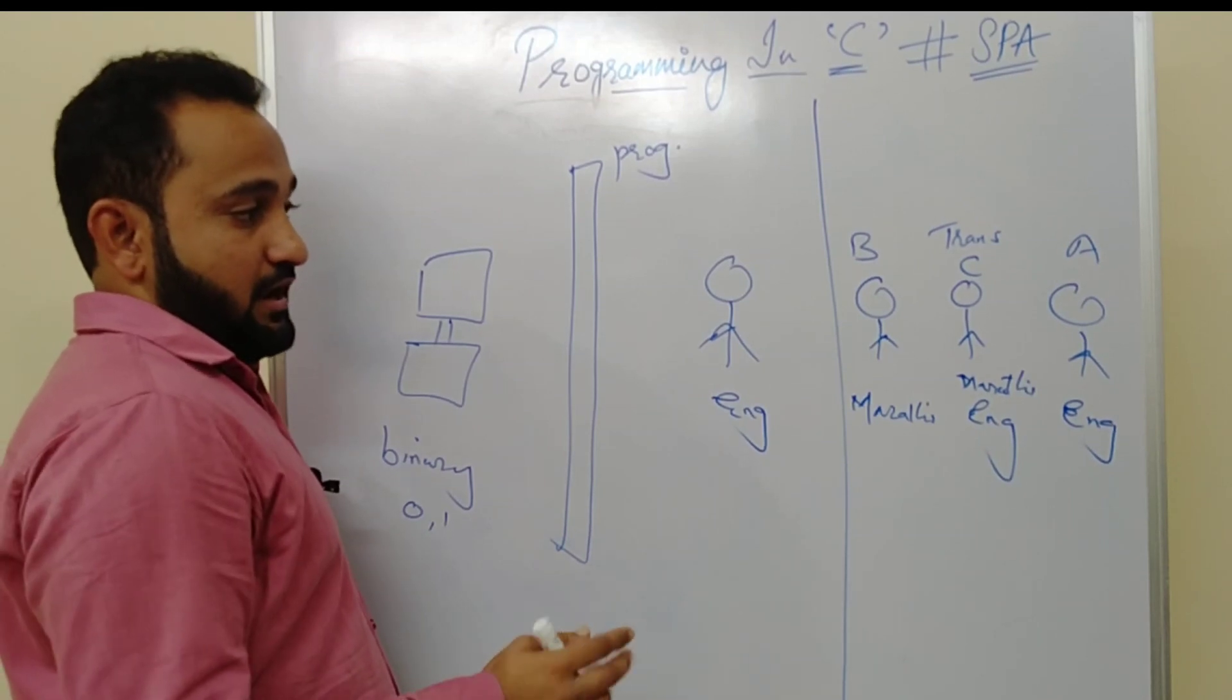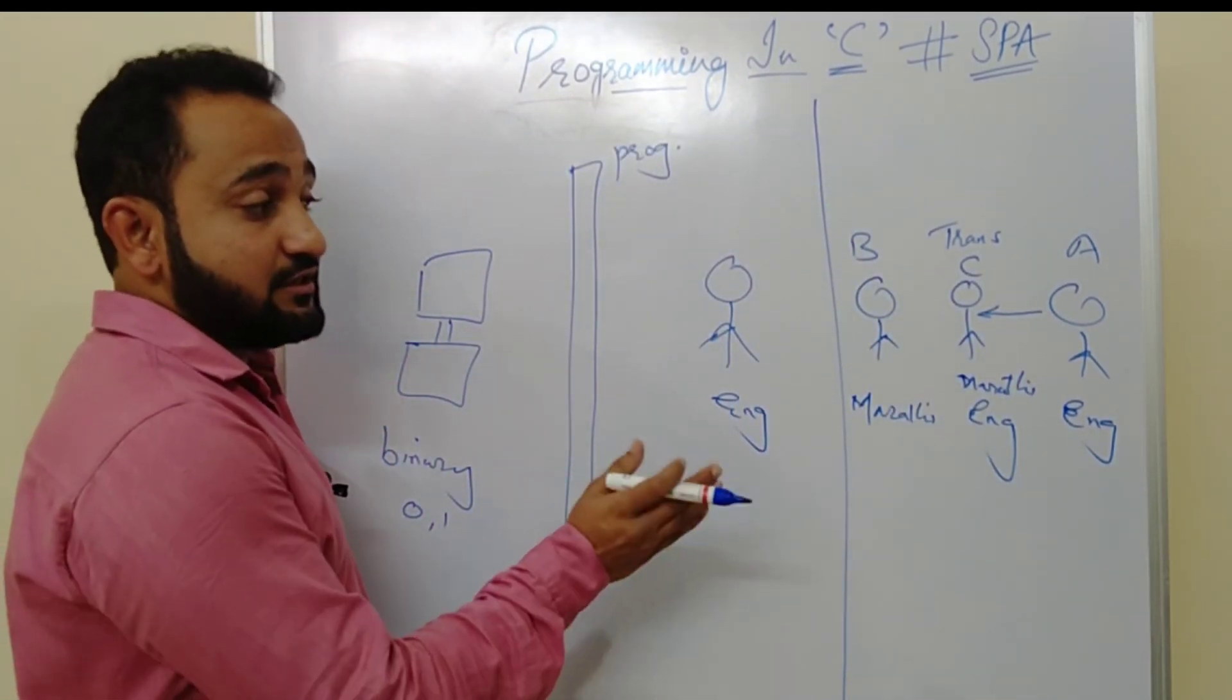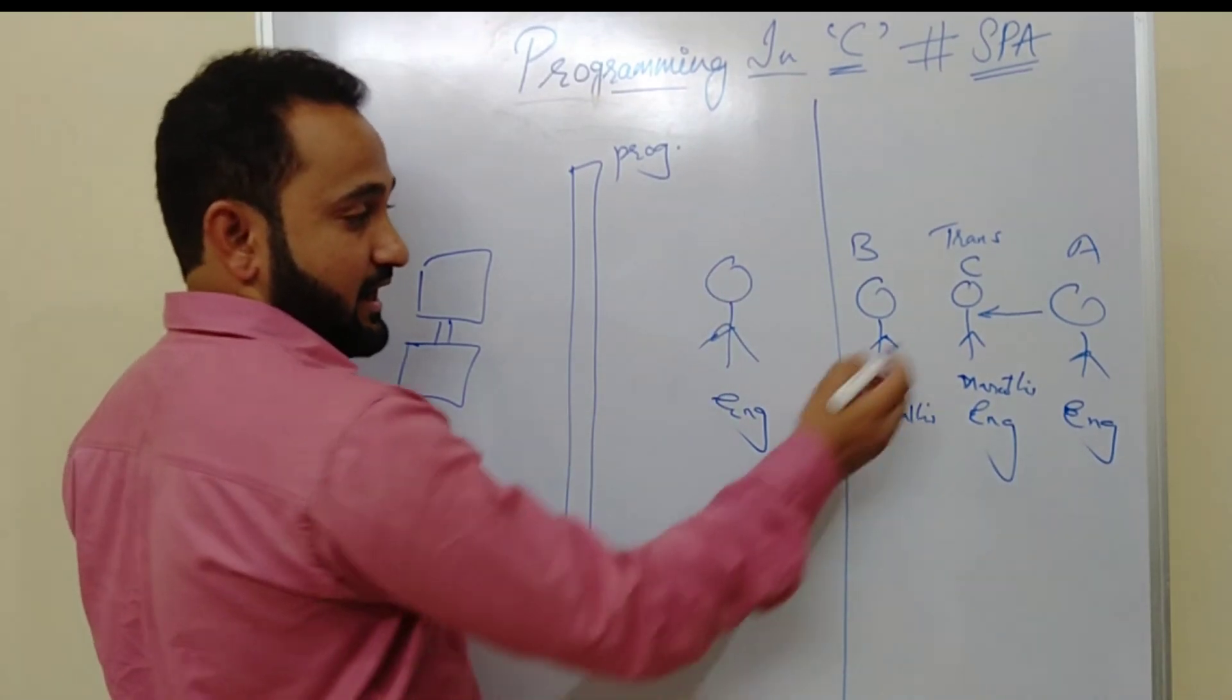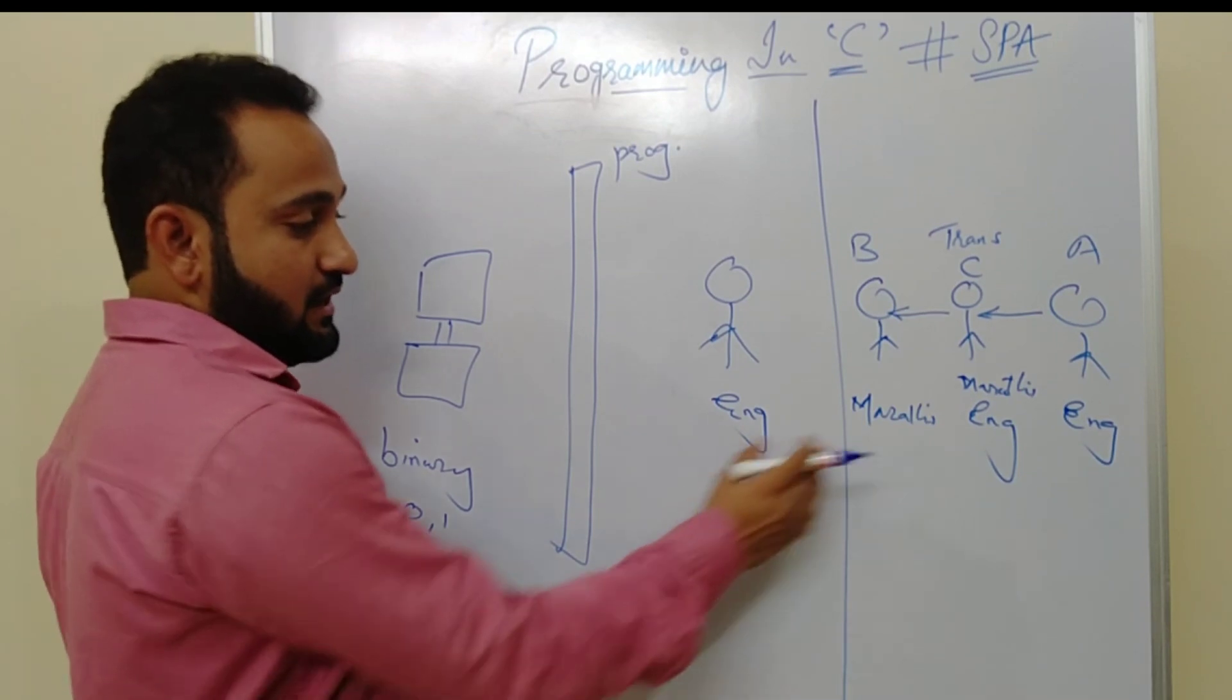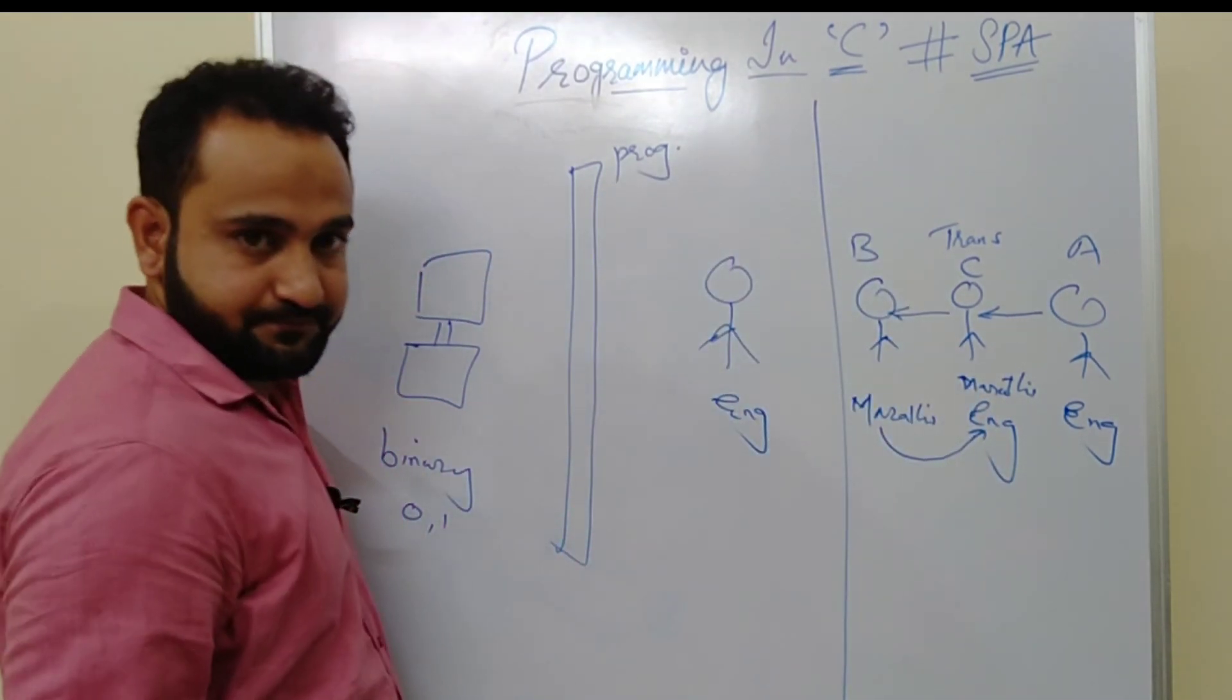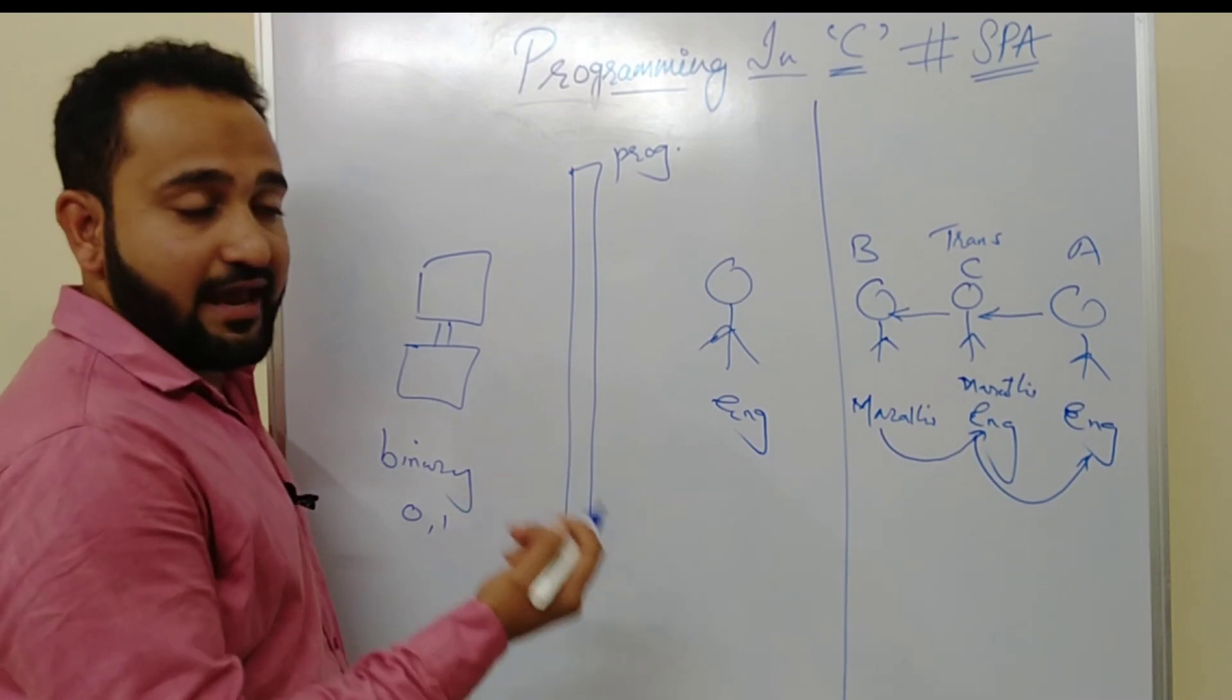He can only speak in English. So it's not feasible, it's not possible to directly communicate between A and B. So there will be some third person who knows Marathi as well as English. We will be calling that as translator, and we'll say that's person C. So now A wants to communicate with B. So he will say things in English language to the translator. The translator will first understand all the things that A wants to say.